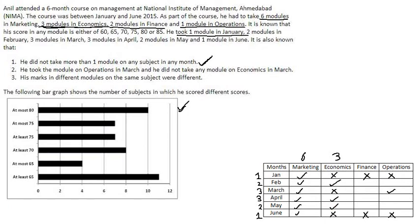Now check for finance. There are 2 modules in finance and 1 module in operations. In the month of February, 2 modules are completed so there will be no module here. Also in the month of May, 2 modules are completed so there will be no module here. So 2 places are left for finance — March and April — and they will be filled. 1 place is left for operations and only 1 module is there for operations.